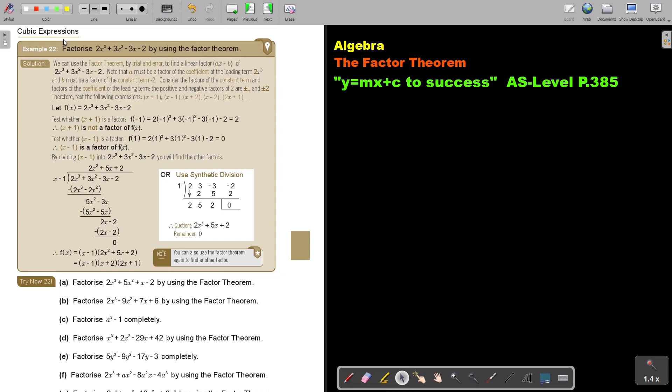Cubic expressions. Factorize this quadratic expression by using the factor theorem. We can use the factor theorem by trial and error to find a linear factor of this. Note that a must be a factor of the coefficient of the leading term 2x to the power 3.